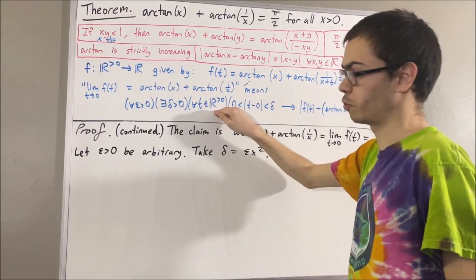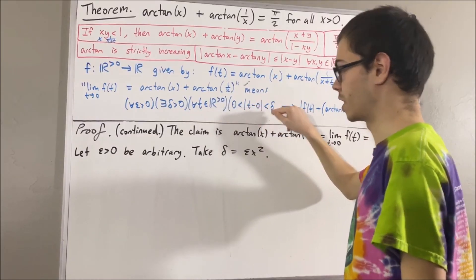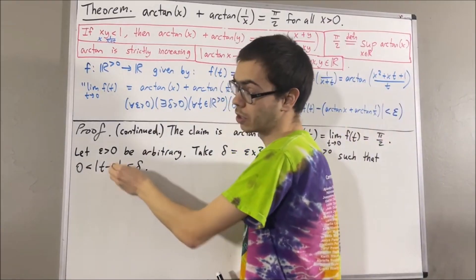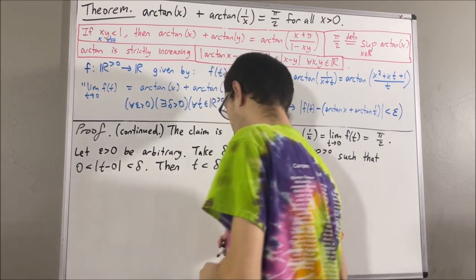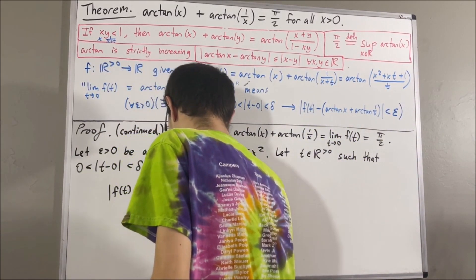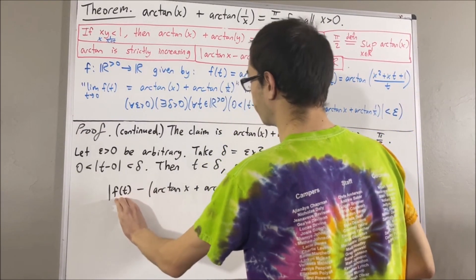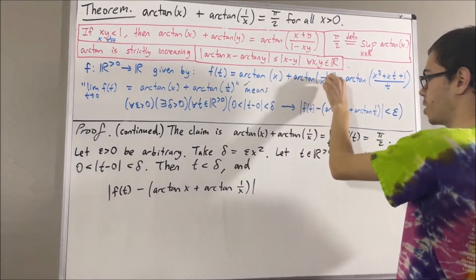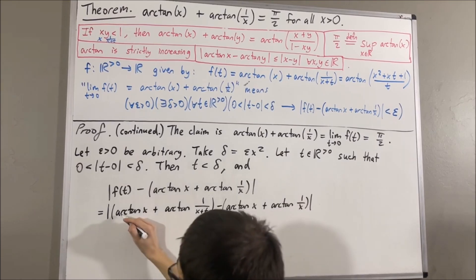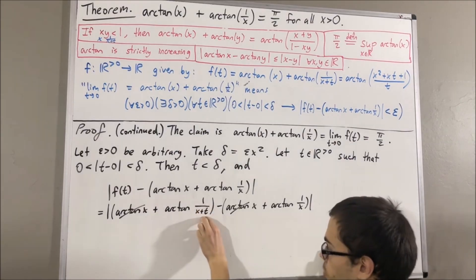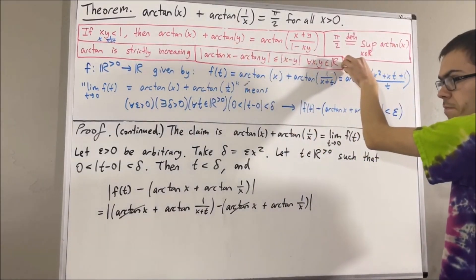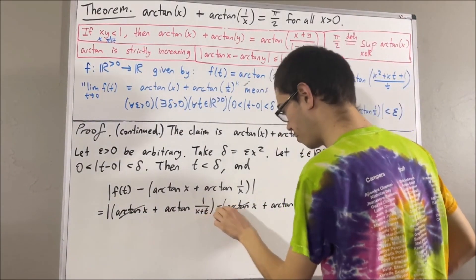Let t be an arbitrary positive real number with 0 < |t − 0| < δ. Since t is positive, |t − 0| = t, so we have t < δ. The goal is to show |f(t) − (arctan(x) + arctan(1/x))| < ε. Writing the left-hand side and substituting f(t) = arctan(x) + arctan(1/(x+t)), the arctan(x) terms cancel, leaving |arctan(1/(x+t)) − arctan(1/x)|. Applying the Lipschitz property of arctangent, this is less than or equal to |1/(x+t) − 1/x|.